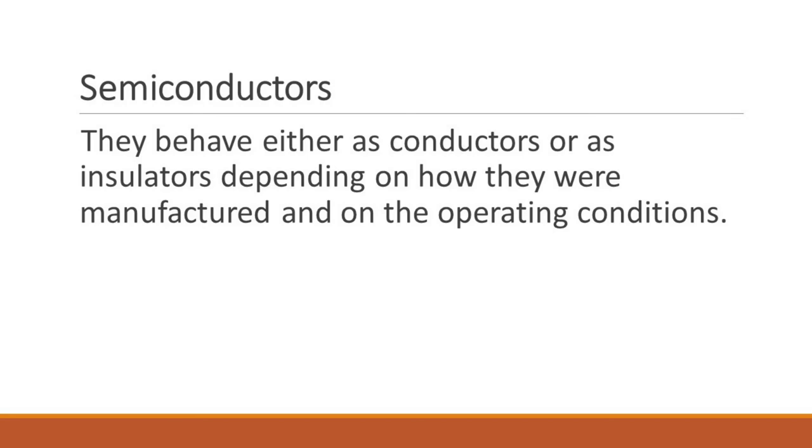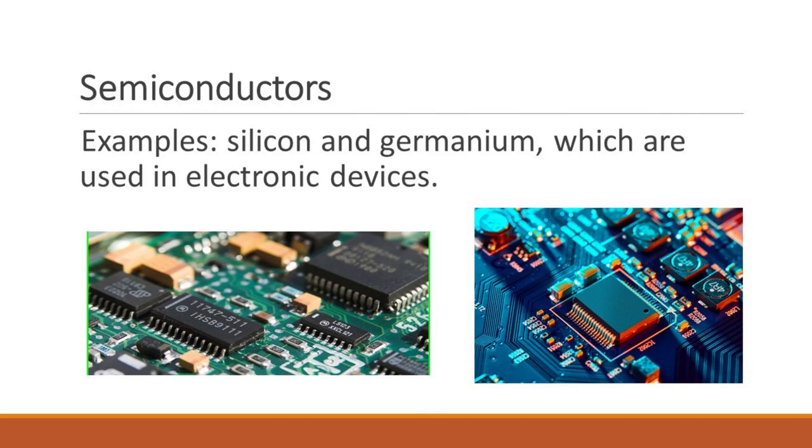Semiconductors behave either as conductors or insulators depending on how they were manufactured and on the operating conditions. So what we do with a semiconductor is to have it operate under certain conditions and have it behave either as a conductor or as an insulator depending on what we want from the device or from the system we're having to work with the semiconductor. Examples of semiconductors are silicon and germanium, which are used in the manufacture of electronic devices.